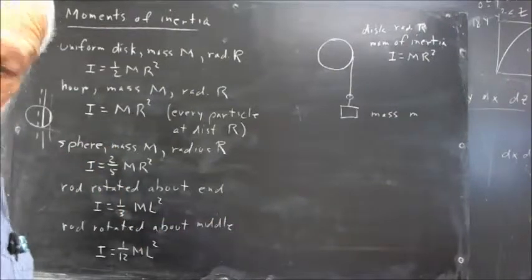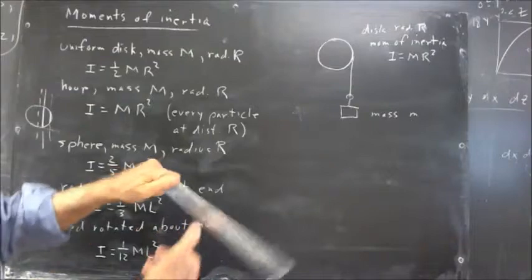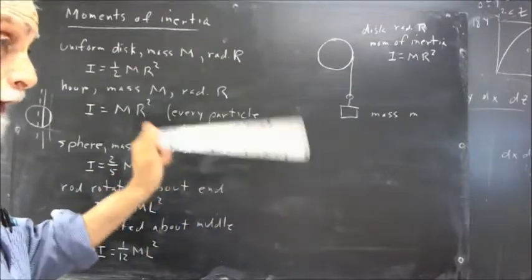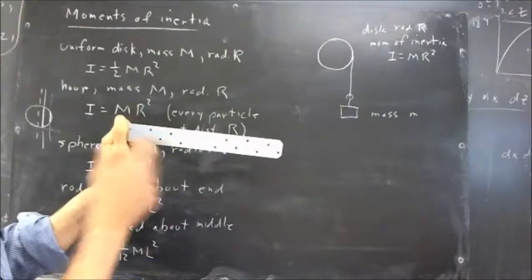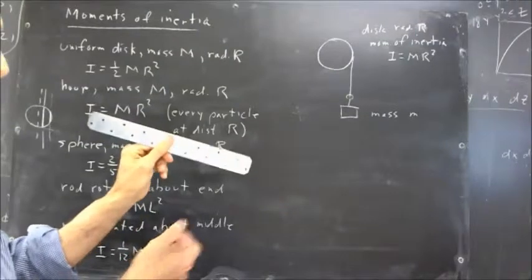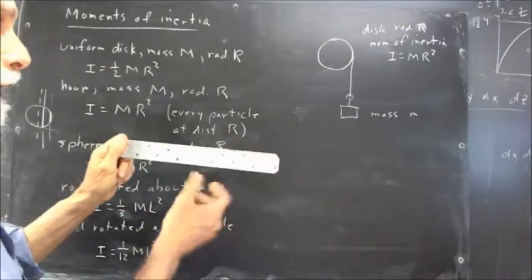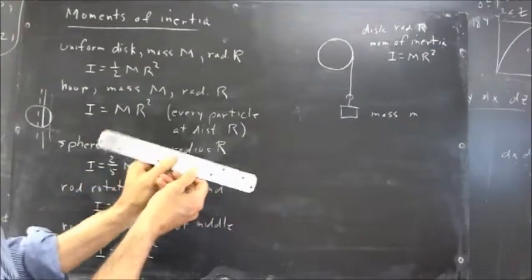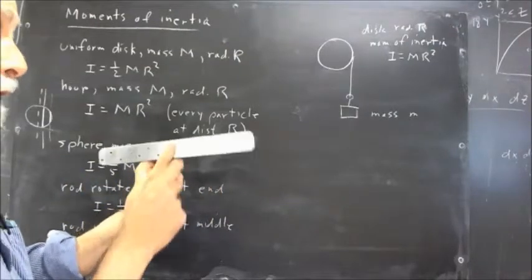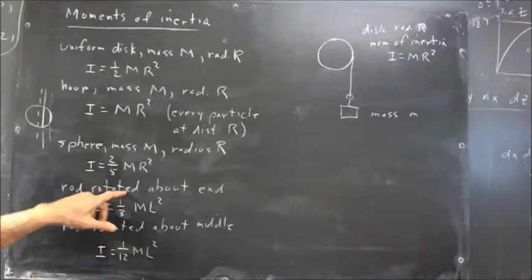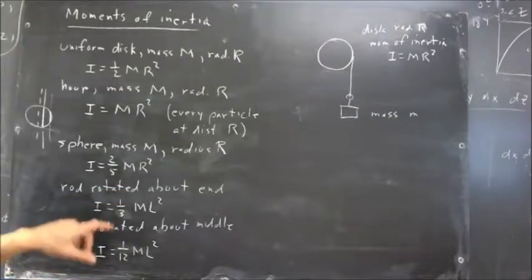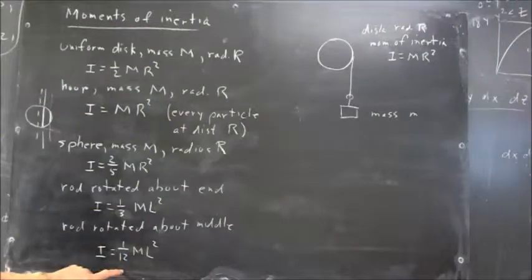If you've got the Rod rotated about the end, then the average distance of the points on the Rod from the axis of rotation is greater than if you have the same Rod rotated about the middle. So, if I'm rotating this Rod about the end, and if I do this and wave this back and forth, I can certainly feel the inertia, the moment of inertia. As opposed to rotating about the middle, well, all the points from here out are further from the axis of rotation than any point is if I rotate it about the center. So, on the average, the distance of the particles is twice as great.